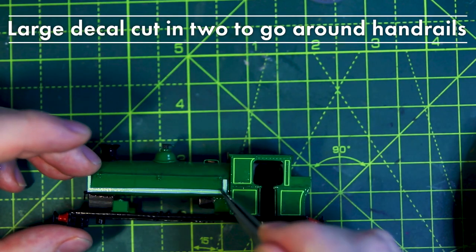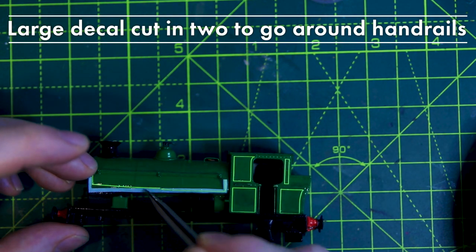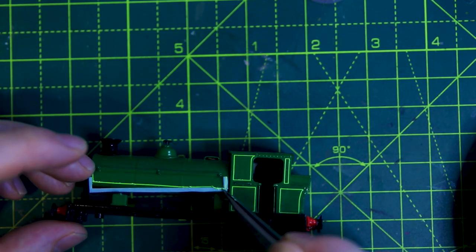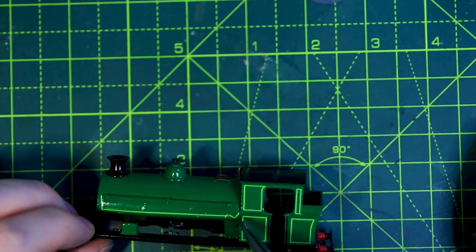So far so good, but the large tank side lining piece needs to go around the handrails, so I've cut it in half and cut around the shape of the lining. You can see how this makes it want to misbehave and twirl around though.